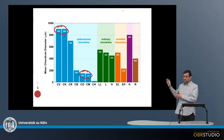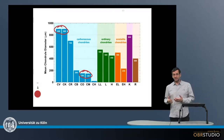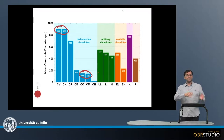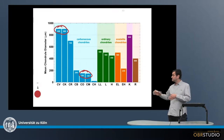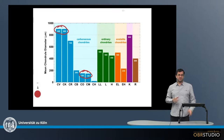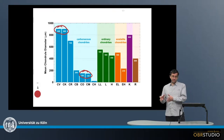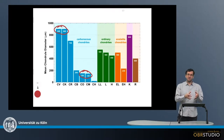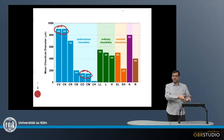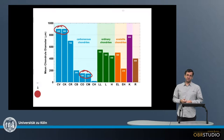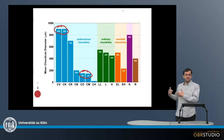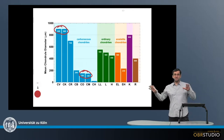It is then also clear that chondrules from CM and CO chondrites cannot have contributed to the CV and CK chondrites, because we don't find small chondrules in CV chondrites. And vice versa, we don't find large chondrules — around 900 microns — in CM chondrites. This means that the chondrules now found in CM chondrites must have formed in a different reservoir in the protoplanetary disc than those contributing to the CV chondrites. This is quite an important constraint: chondrule sizes indicate that chondrites must have formed in various reservoirs within the protoplanetary disc.